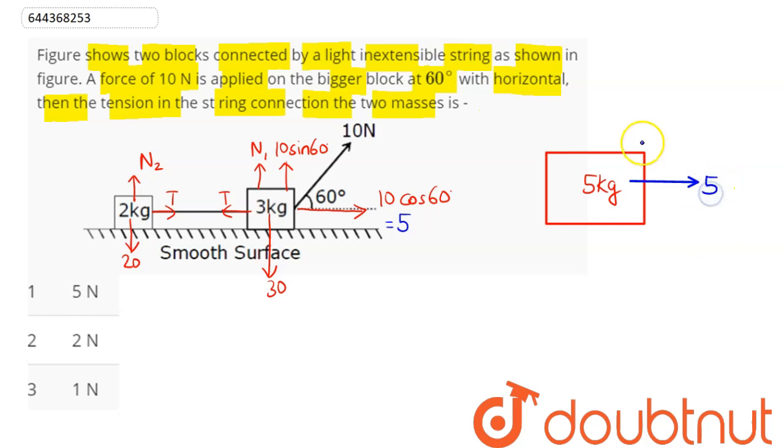Hence the net system accelerates rightwards with acceleration a. So pseudo force acts in backward direction given as 5a. Hence 5a comes out to be 5, so we can say a comes as 1 meter per second square.